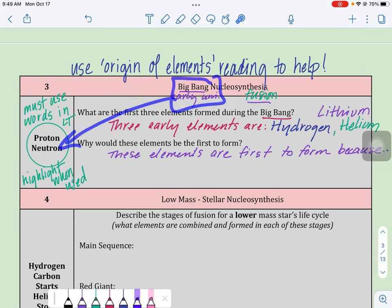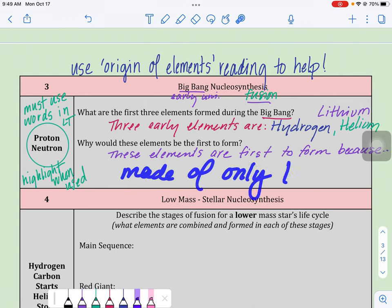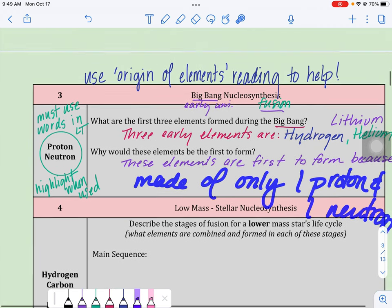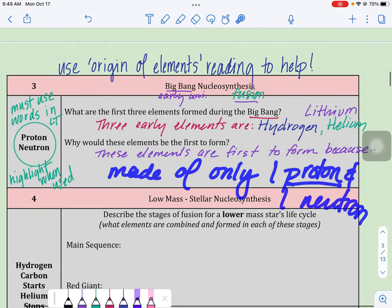So in the Big Bang, once these atomic particles were created, these elements then could be created. So they're made up of only one proton, one neutron. They're so small, they're made up of just these mini atomic particles. Once those existed, these elements formed.